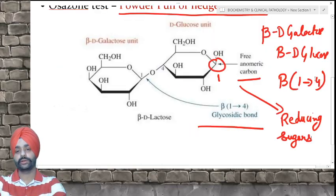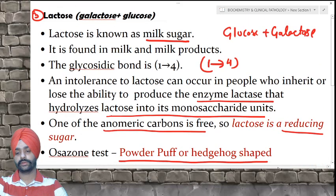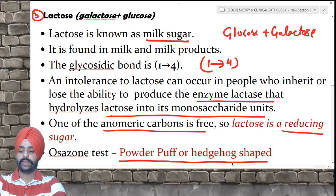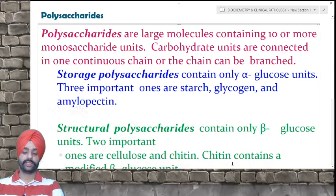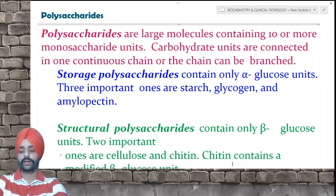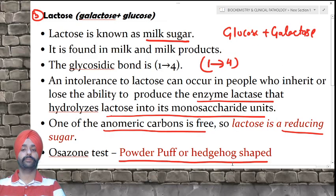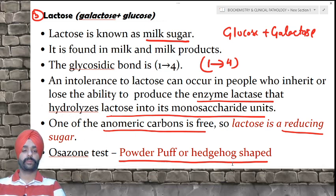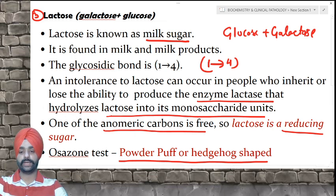These were all about the various disaccharides and how they are formed. In our next class, we shall be understanding the concept of polysaccharides. Till then, revise the disaccharides and understand how the beta or alpha linkages occur and help in formation of glycosidic bonds so that disaccharides can be formed easily. Keep revising and keep learning these facts, which will be helpful to understand future concepts. Thank you.